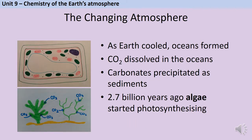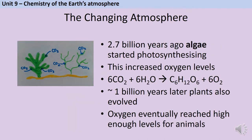As Earth aged, volcanic activity started to die down and the temperature began to drop. Eventually it fell low enough that water vapour in the atmosphere condensed into liquid water, and suddenly we had Earth's first oceans. This is important for two reasons: the carbon dioxide in the atmosphere was able to dissolve in those oceans, forming carbonates, some of which precipitated out as insoluble solids dropping to the ocean floor. The second important thing is that aquatic green organisms called algae began photosynthesizing - this early photosynthesis was happening over a billion years before the first true plants evolved.